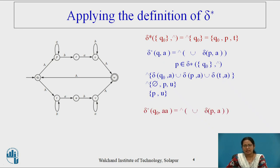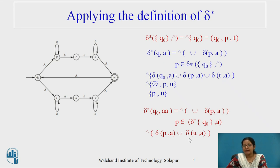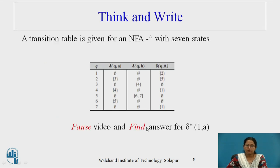Let's see one more example: delta star(Q0, AA). We break off the last symbol A, so we need null closure of the union of delta(P, A) where P takes the value delta star(Q0, A). We already know delta star(Q0, A) is {P, U}. So we compute delta(P, A) union delta(U, A). The null closure of P is just P.